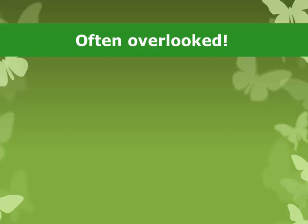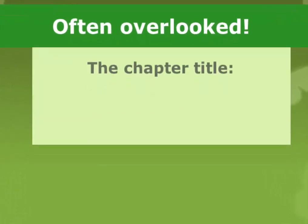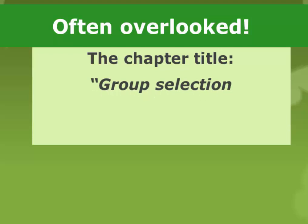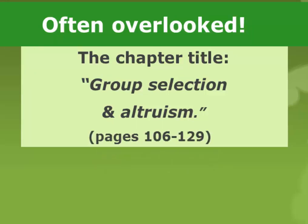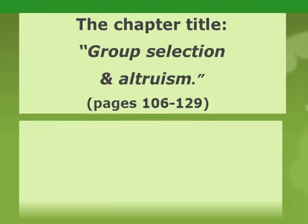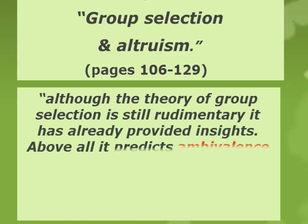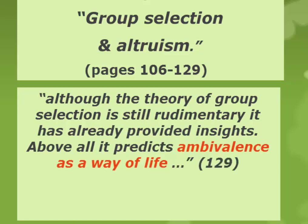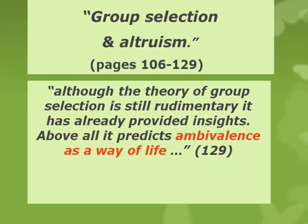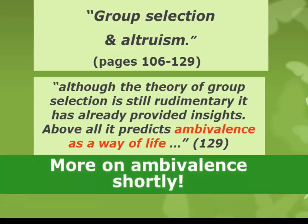It's often overlooked among contemporary critics of Wilson that his discussion of inclusive fitness and reciprocal altruism occurred in a chapter titled Group Selection and Altruism. This is important because Wilson was an early defender of the value of group selection. He concluded this chapter by noting that although the theory of group selection is still rudimentary, it has already provided insights, and above all it predicts ambivalence as a way of life. We're going to have more to say on ambivalence.